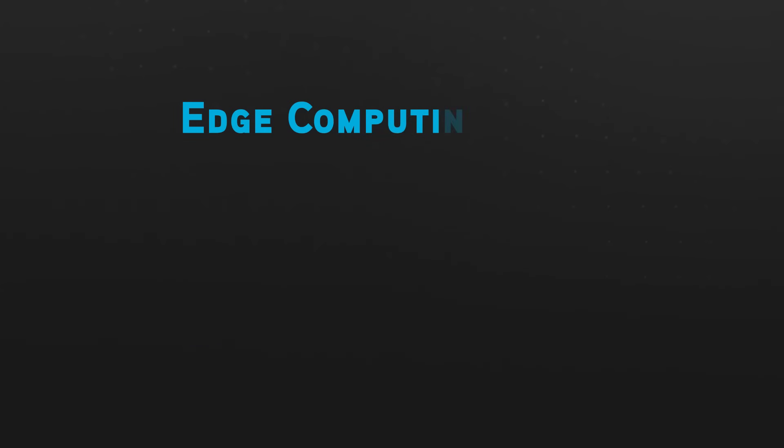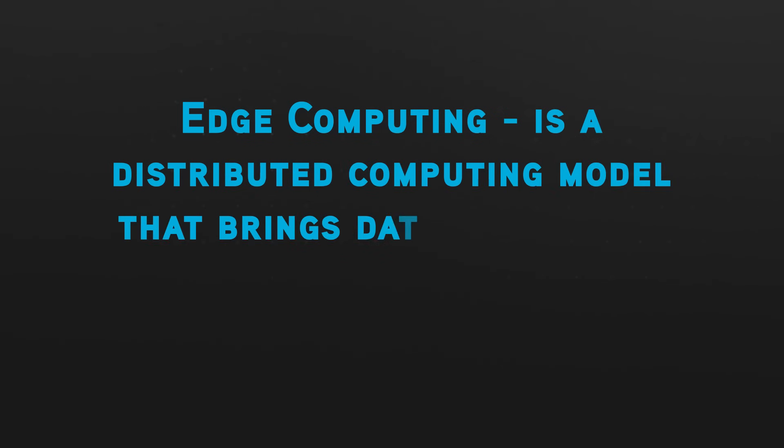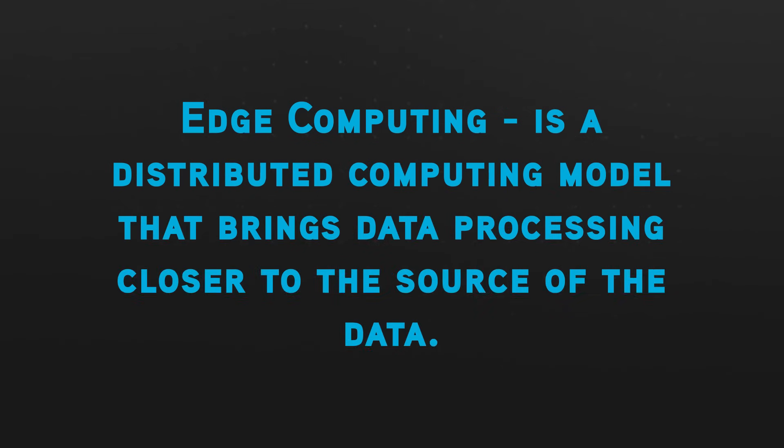Let's begin by giving edge computing a proper, simple definition. Edge computing is a distributed computing model that brings data processing closer to the source of the data. For example, if you have a smart car like a Tesla, without edge computing capabilities, all of the data generated from this car would have to travel to a data center or to the cloud to be processed and then travel back. With edge computing, that Tesla has compute power to analyze the data and make actionable decisions based on that data.